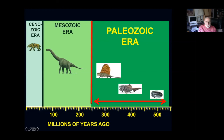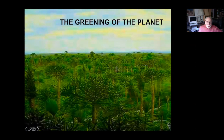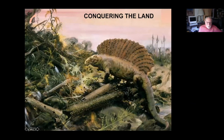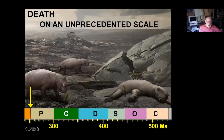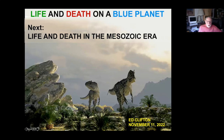So that is the story of the Paleozoic era. It starts with an explosion of diversity, incurs the greening of the planet, and the conquering of the planet by the animals. All of that happens during the Paleozoic. But it ends with death on an unprecedented scale. Next week we're going to follow on in the aftermath of that death and look at life and death in the Mesozoic era.